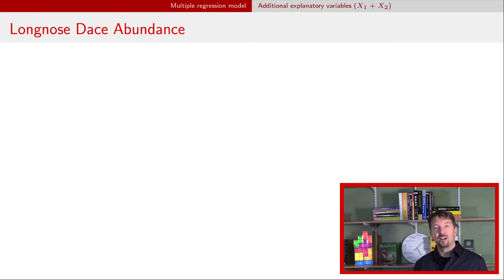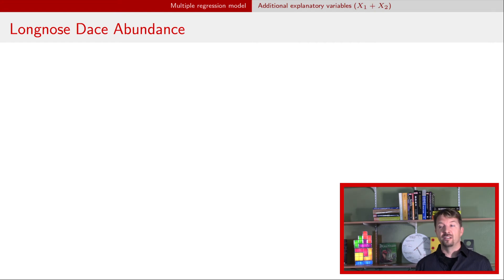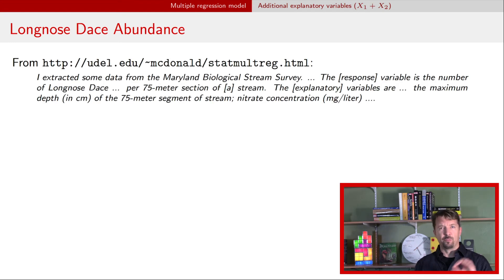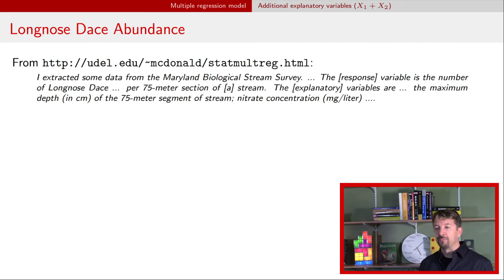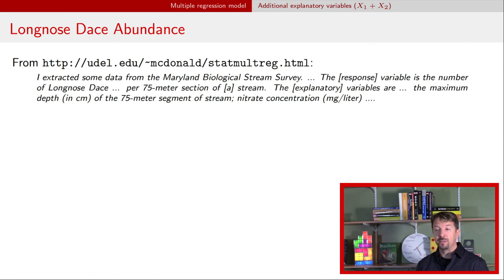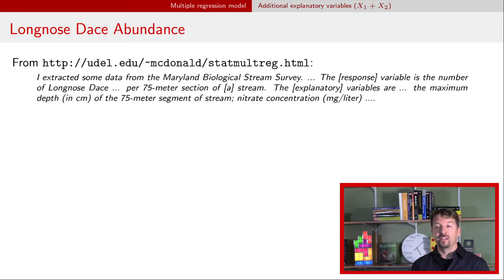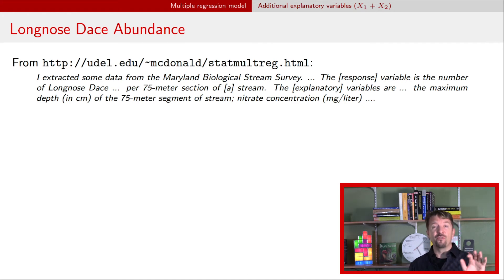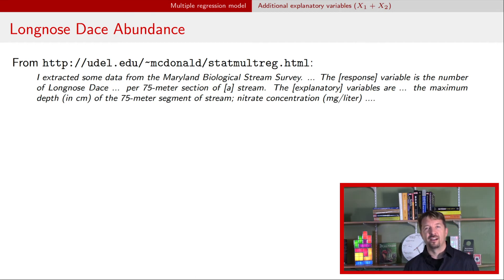In the second example, we're moving to an observational study that counted long-nosed dace, which I believe are a type of fish. The response variable is the count — the number of long-nosed dace occurring in a certain segment of a stream. We have a couple of explanatory variables: the maximum depth of the stream and the nitrate concentration in that stream, both of which we think would affect long-nosed dace abundance. If you're familiar with Poisson regression, that's probably a better model to use here, but I'm going to use a linear regression model just for simplicity in demonstrating some ideas.